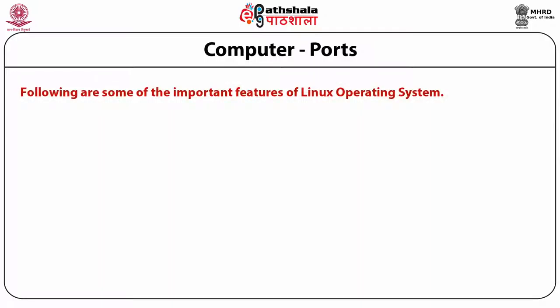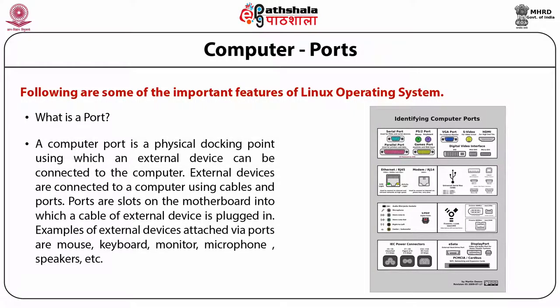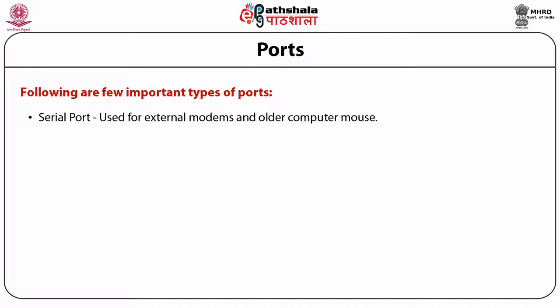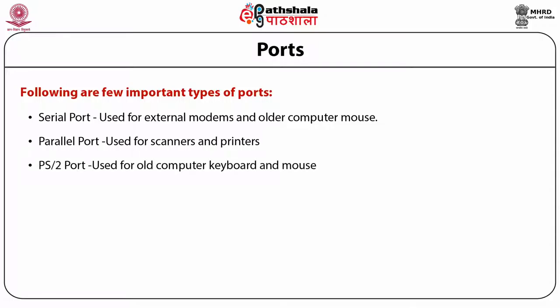Another important unit of a computer is a port. A computer port is a physical docking point using which an external device can be connected to the system. External devices are connected using cables and ports — these are the slots on the motherboard into which the cable of the external device is plugged in. Examples of external devices include mouse, keyboard, monitor, microphone, speakers and everything. Some important types of ports on the motherboard are serial port, mainly used for external modems and older computer mice; parallel ports used for scanners and printers; and PS2 ports for earlier keyboards and mice.